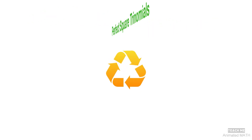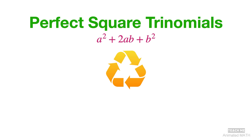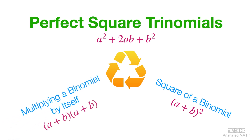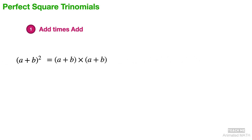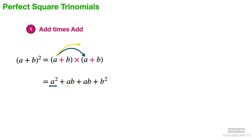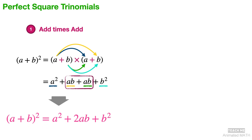Let's get started with the perfect square trinomial, also known as square of a binomial or simply multiplying a binomial by itself. The first pattern is perfect square trinomial add times add. The square of a plus b is equal to a plus b times a plus b. Apply the distributive property when multiplying the binomials. Combine like terms — the ab terms — and you'll have a squared plus 2ab plus b squared.